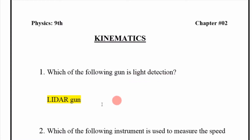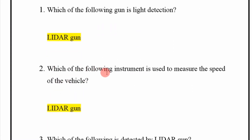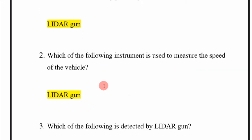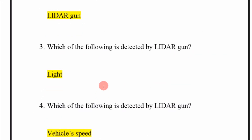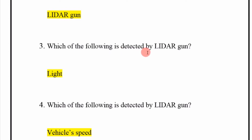Which of the following gun is a light detection gun? LIDAR gun. Which of the following instrument is used to measure the speed of a vehicle? LIDAR gun.